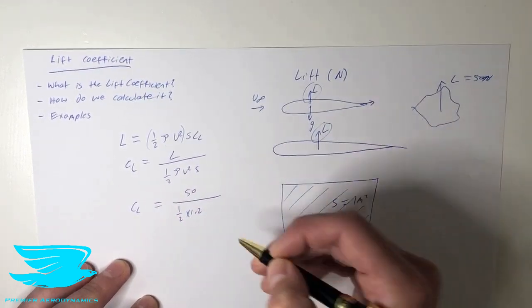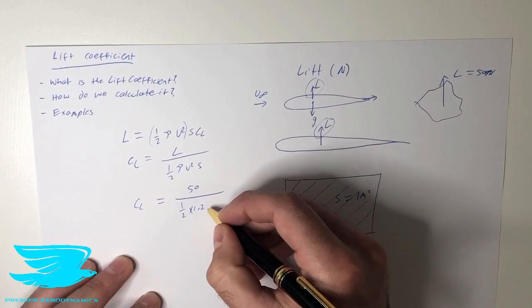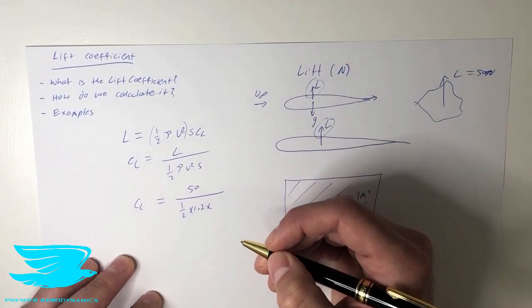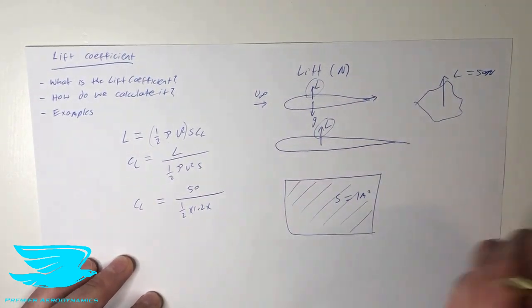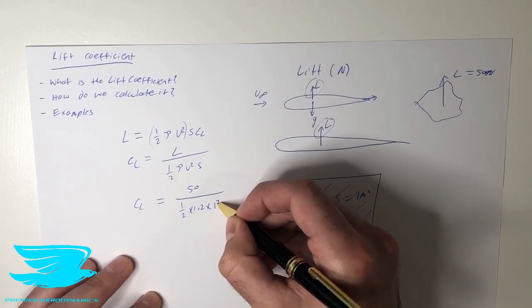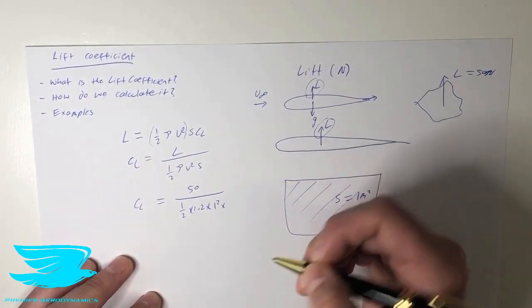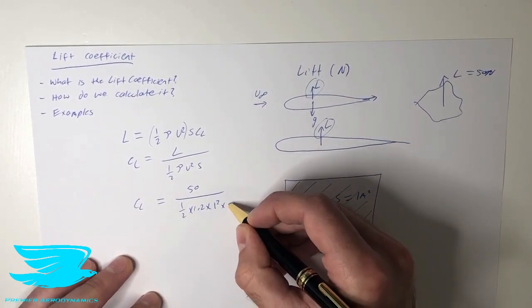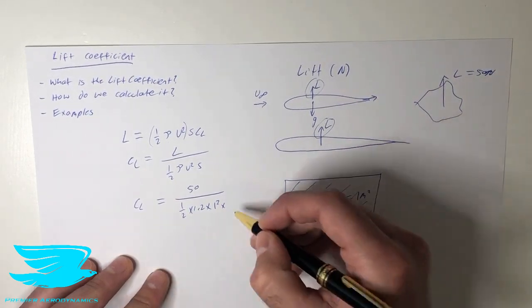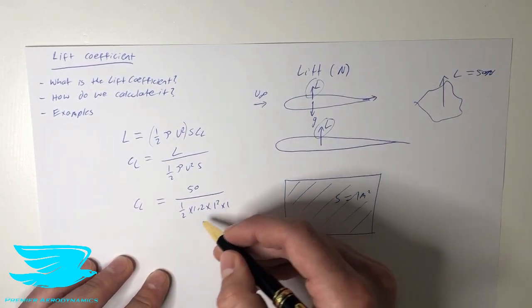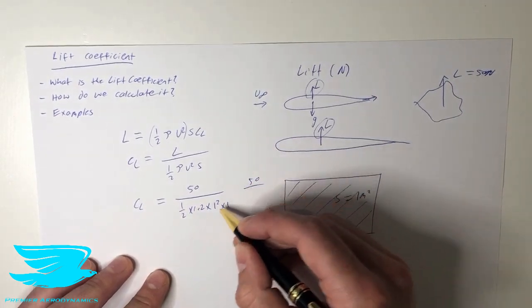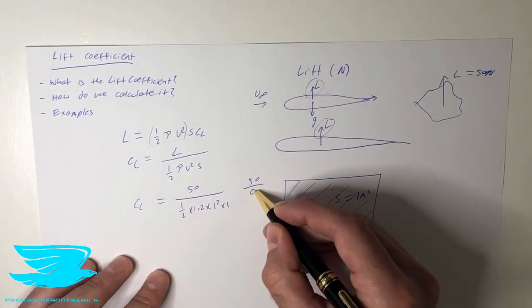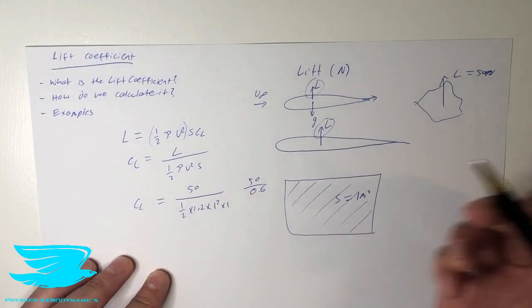let's say it's 1.2, but it's probably going to be different, because the density of air does change quite a lot throughout the day, times by the velocity, so let's say the velocity is 1 meter squared, just to make it easy. So 1 meter times 1 meter is 1, and then times the reference area, let's say it's 1 as well. So this comes out to be 50 divided by 0.6.